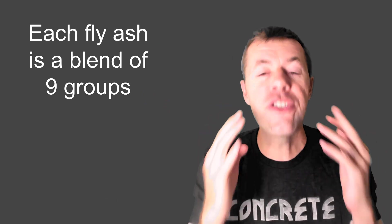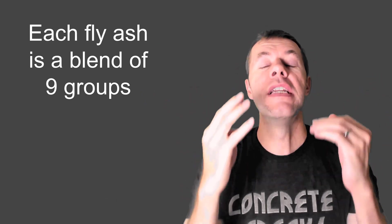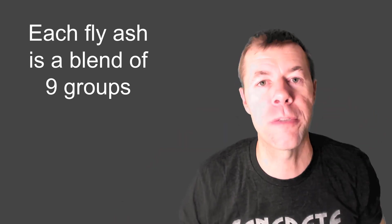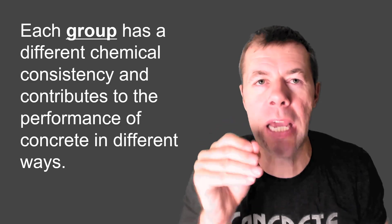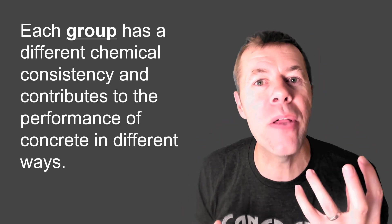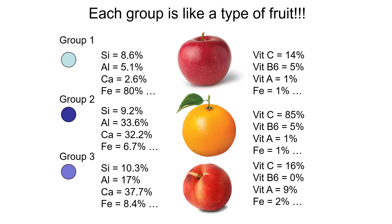We figured out that each fly ash is a blend of nine groups — nine fundamental groups. Each group has a different chemical consistency or chemical makeup, and they have different abilities to contribute to the concrete in different ways. I think of these fly ashes like fruit — here comes the fruit salad part. Each one of these fly ashes has different amounts of silica, aluminum, calcium, iron, and lots of other oxides as well.